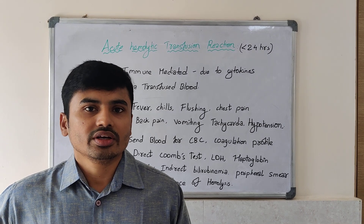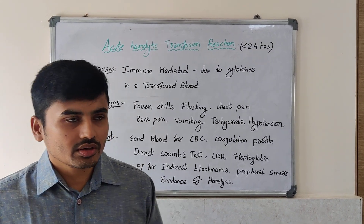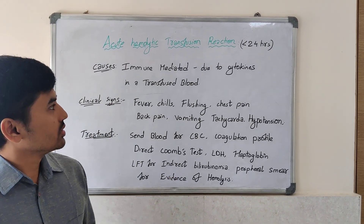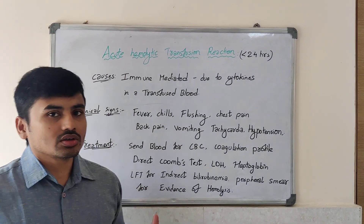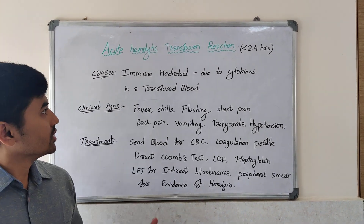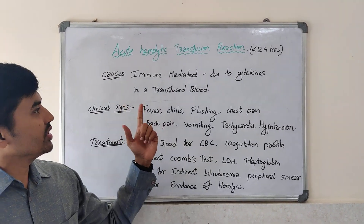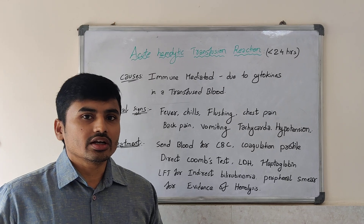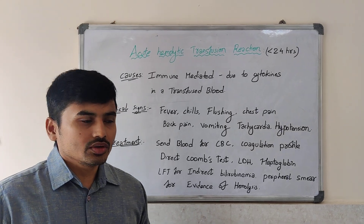Acute hemolytic transfusions occur within 24 hours. The cause of acute hemolytic transfusion reaction is immune mediated, due to cytokines in the transfused blood.